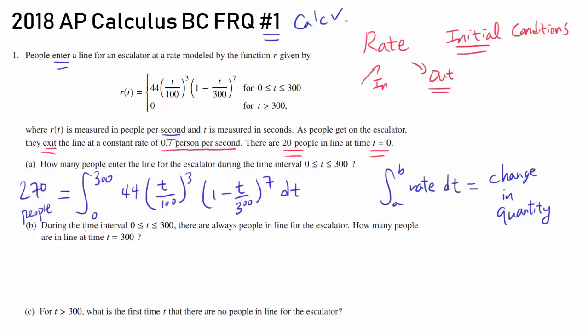For part B, during the time interval 0 to 300, there are always people in line for the escalator. How many people are in line at time t equals 300? So we want to figure out how many people are waiting for the escalator after 300 seconds pass by. Well, at time of 0, we have 20. So make sure you pay attention to that. So we are starting with 20. And from time of 0 to 300, 270 people are entering the line. So we are adding 270 to it. But how many are going out?